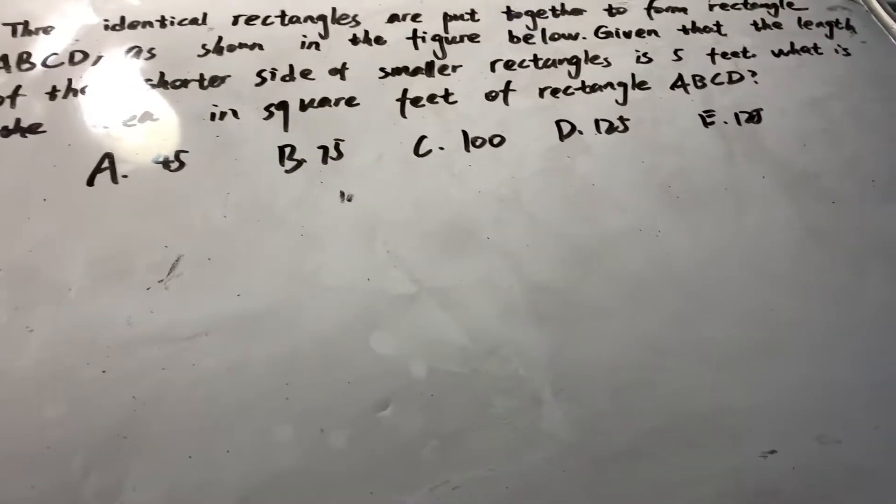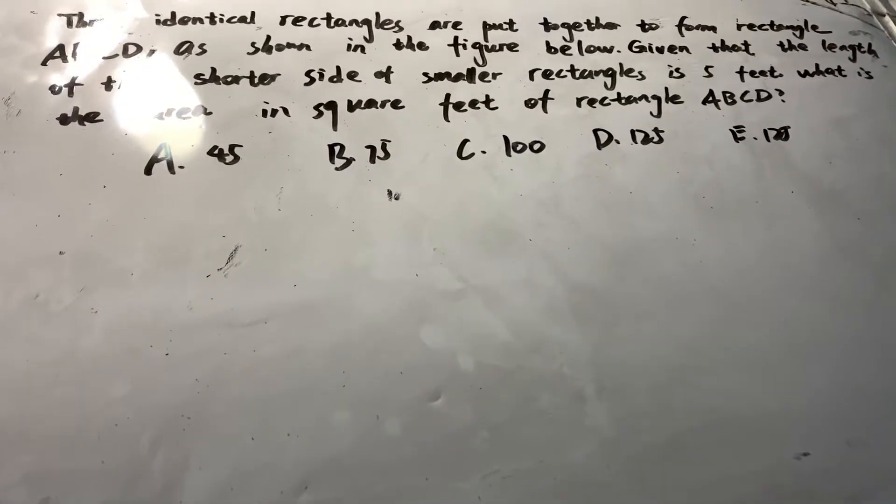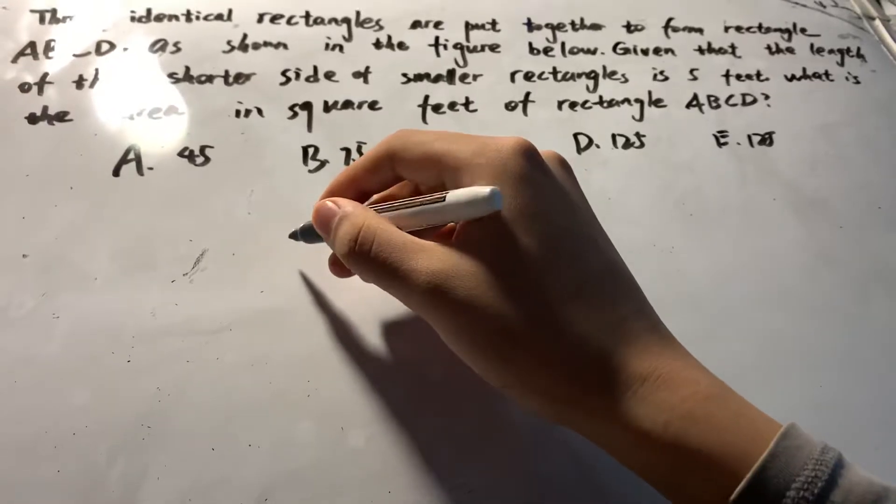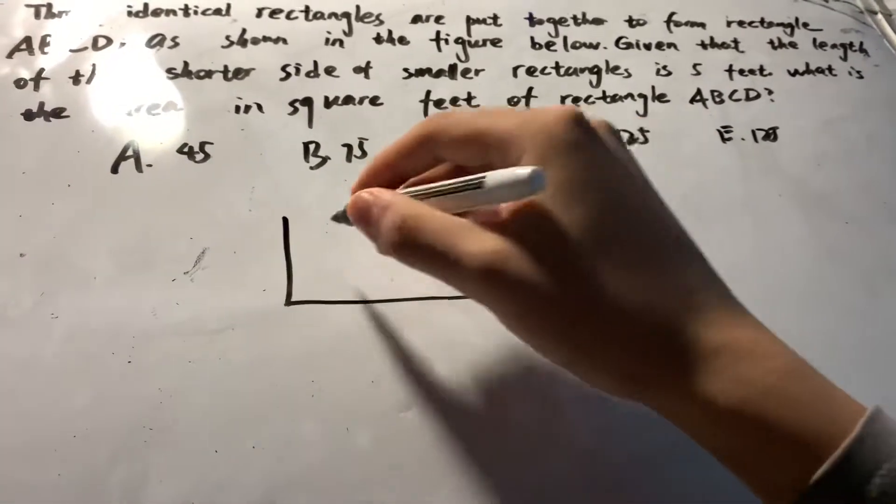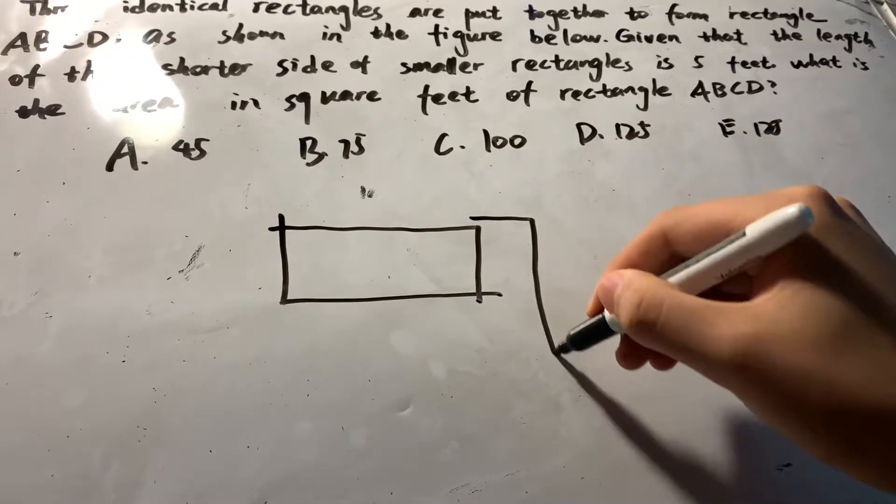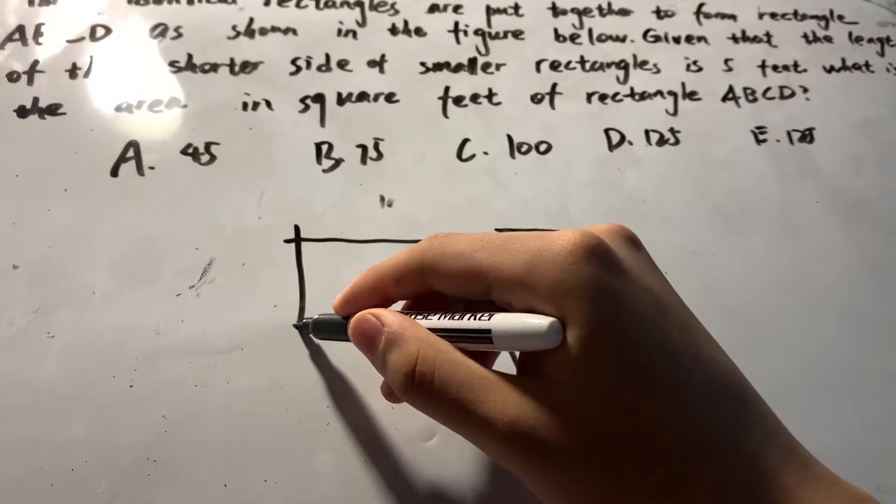Now we are going to do the second problem. The identical rectangles are put together to form rectangle ABCD as shown in the figure below. Given that the length of the shorter side of the smaller rectangle is 5 feet, what is the area in square feet of rectangle ABCD?